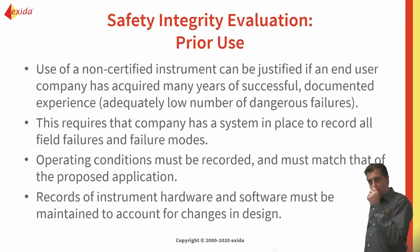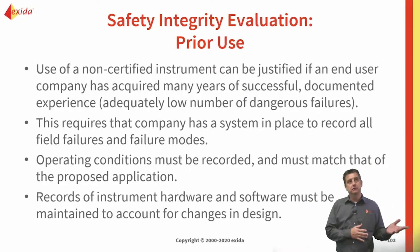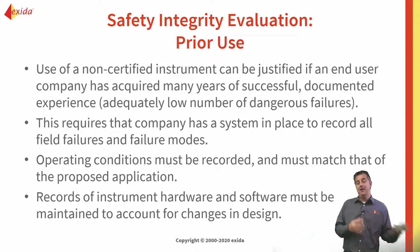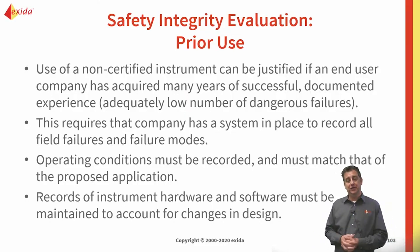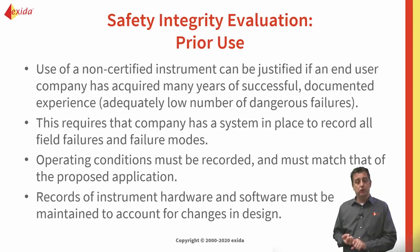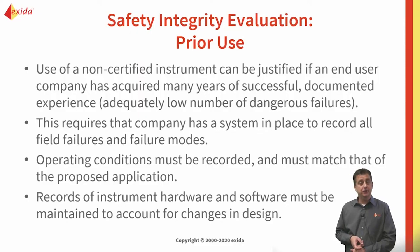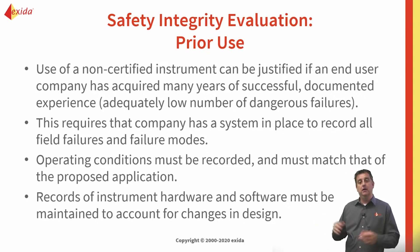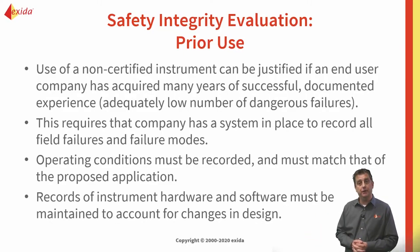The second aspect is what we refer to as prior use. You can choose a product based on prior use justification. Typically we apply that to non-certified equipment where, as an end-user company, we have acquired successful operating information. It requires that you have a system in place that records all field failures and failure modes, and that your operating conditions are recorded and must match the operating conditions of the new application. If you have experience with a device on the North Slope in Alaska, that experience may not apply to Houston, or vice versa. You need to be in a similar environment with a similar application.